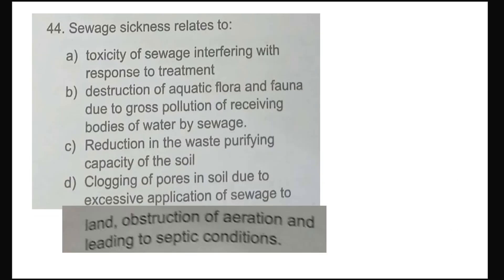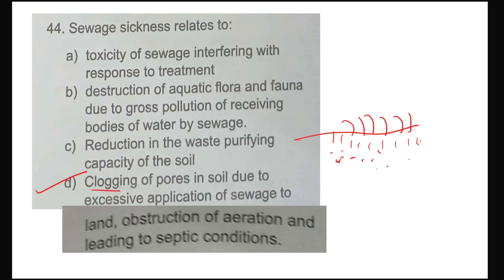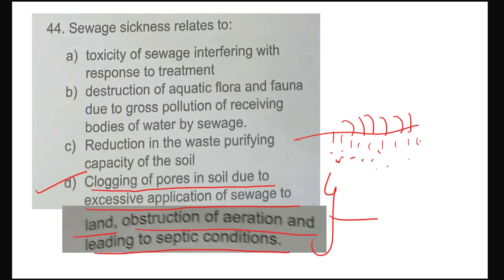Sewage sickness: when sewage is continuously applied to a piece of land, the suspended particles choke the soil voids, reducing soil productivity. Option number D will be correct: clogging of pores in soil due to excessive application of sewage to land, causing obstruction of aeration and leading to septic conditions. This is called sewage sickness.